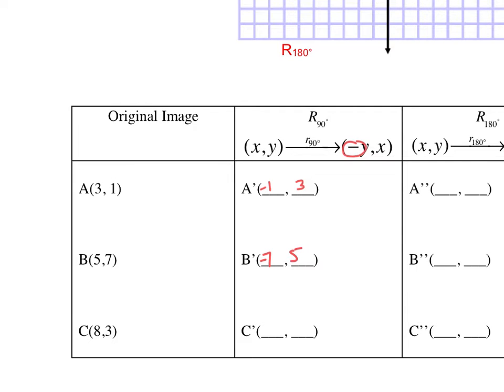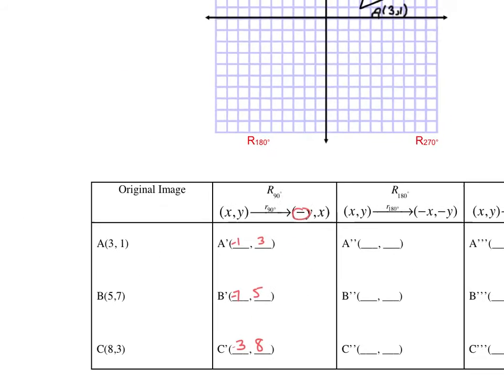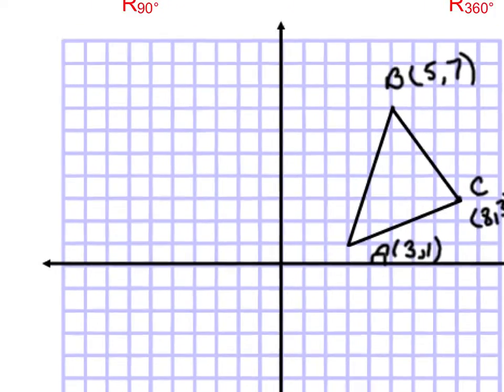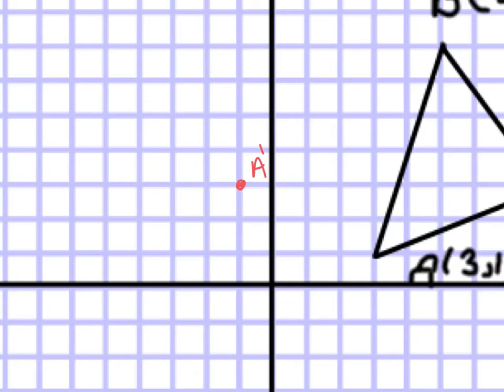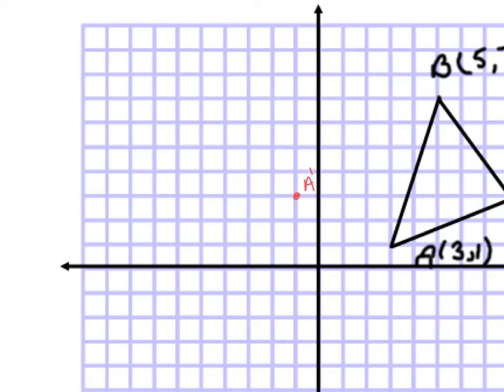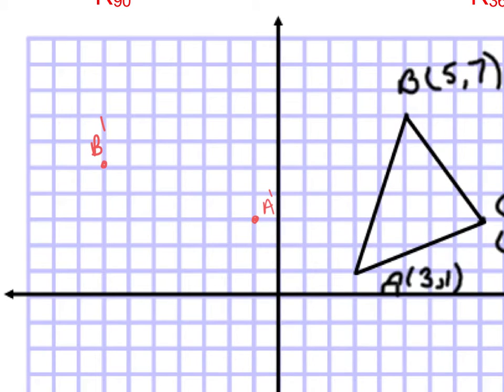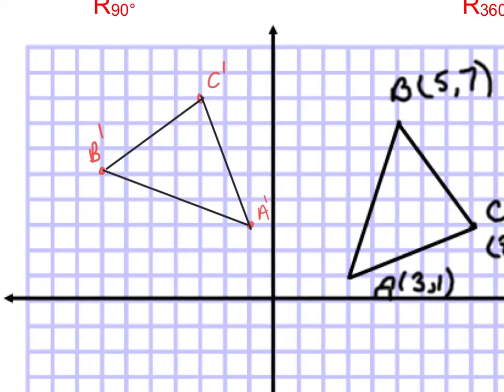And then last but not least I have the point (8,3) so I switch them and I make my first value opposite of what it actually is. So a negative 3. Let's plot those points. A prime is (-1,3). B prime is (-7,5) and C prime is (-3,8). And that's a rotation of 90 degrees. What we're going to do now is we're going to connect those with straight lines. And that's our triangle after a rotation of 90 degrees.